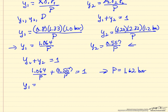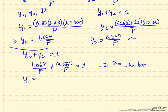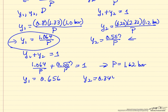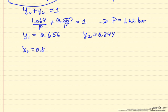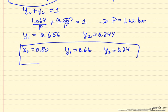Once we have the pressure, we can go back to this equation to get y1, 0.656, and then y2, 0.344. So when x1 equals 0.8, y1 equals 0.66, and y2 equals 0.34, if we're going to use significant figures, and the pressure for this equilibrium is 1.62 bar.